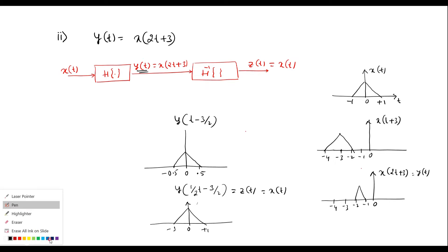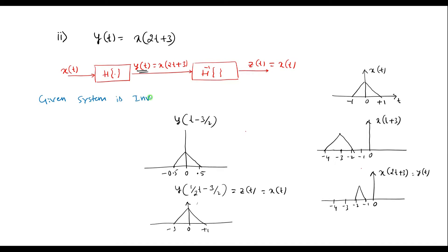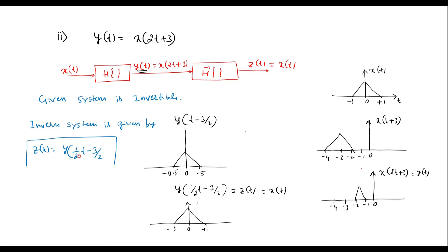To conclude: the given system is invertible. The inverse system is given by z of t equals y of one-half t minus 3 by 2. This is the inverse system.